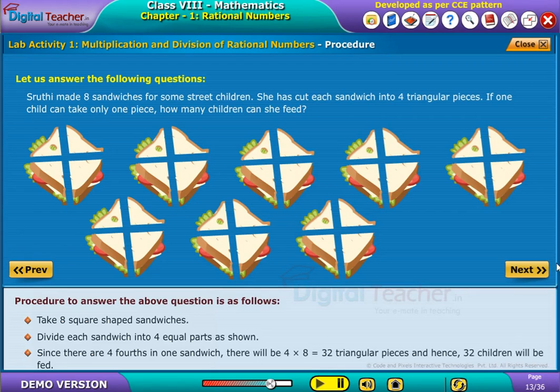there will be 4 into 8 equal to 32 triangular pieces and hence, 32 children will be fed.